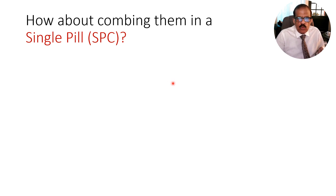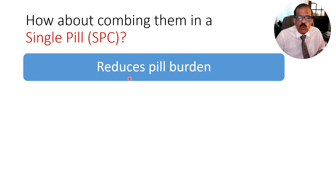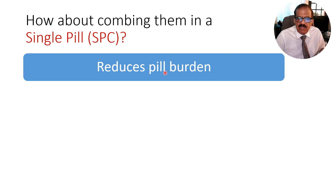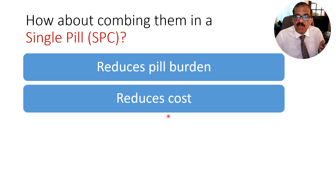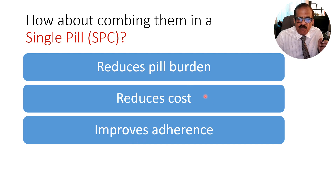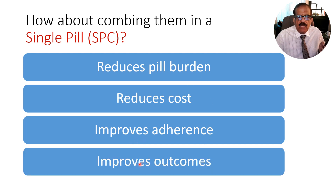When using multiple agents, combining them in a single pill has advantages: it reduces pill burden — these patients may already be taking many pills for other comorbidities, so fewer pills improves likelihood of adherence. Combining drugs also reduces cost and improves adherence, which should then improve outcomes. Whenever available, we should use combination pills of complementary-acting drugs.